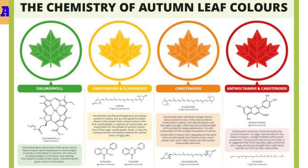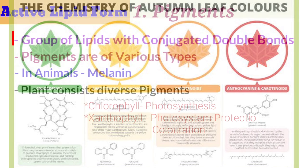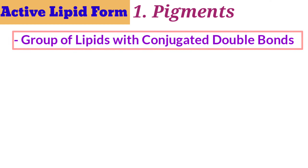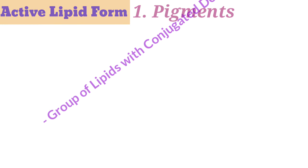As the photograph indicates, leaf color shows diversification because of the presence of pigments in it. So the key point is that the group of lipids with conjugated double bonds are responsible for pigment formation.